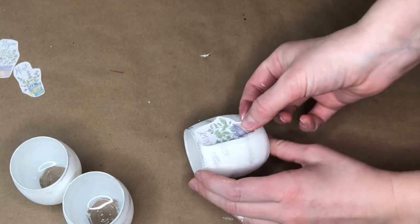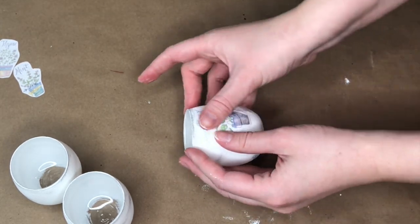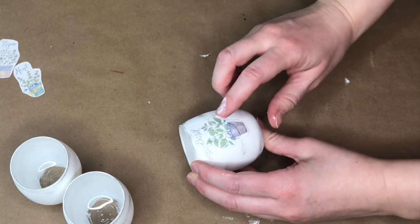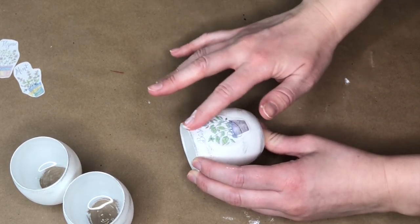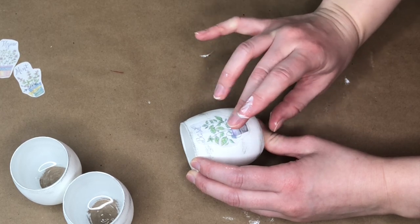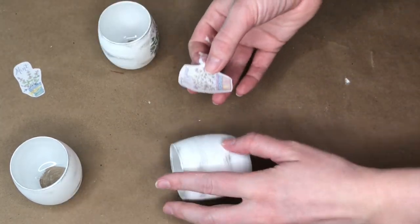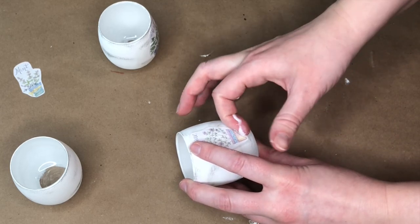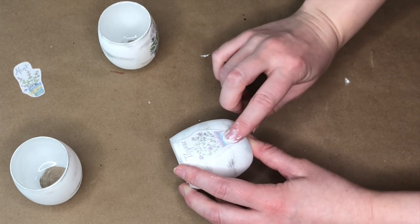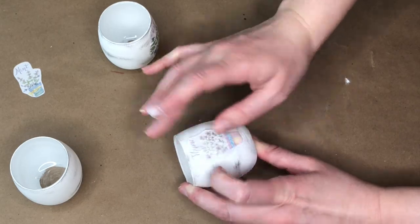To adhere the labels to the glass jars, I took a little bit of mod podge on my finger and just placed that on the back of the label and then very lightly went over the label with some more mod podge. And I just continued doing this with every single jar and label, adding a bit of mod podge on the back of the label and then also on top of it.